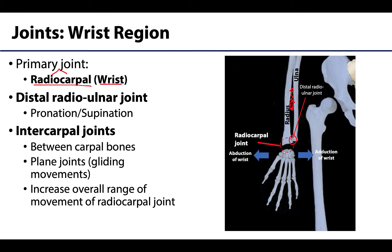Between each and every carpal bone there will be an intercarpal joint. The joint between the proximal row and the distal row is sometimes referred to as the midcarpal joint, but as a group we can call these intercarpal joints. They are plane joints with gliding movements — very slight gliding movements — and these serve to increase the overall range of motion of the radiocarpal joint.